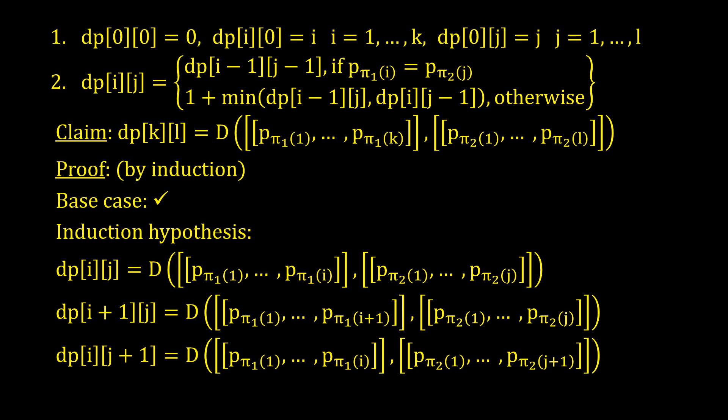We've initialized the algorithm correctly, because the dissimilarity of two empty arrangements is zero. The dissimilarity of an empty arrangement and an arrangement containing i elements is i. We have to delete all the elements.